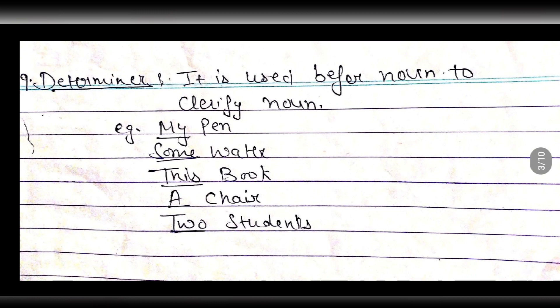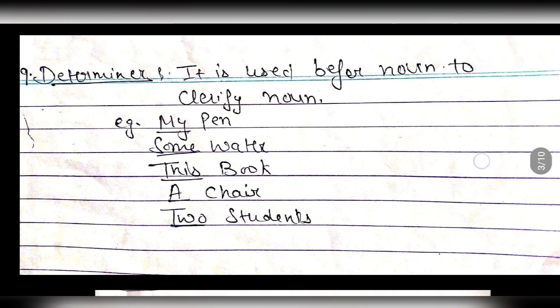Next is determiner. A determiner is used before a noun to clarify it. Articles and adjectives can act as determiners, but not all determiners are articles or adjectives. For example, 'my pen' — 'my' clarifies the noun 'pen,' so it is a determiner. Examples: 'my pen,' 'some water,' 'this book,' 'a chair,' 'two students.' Here 'my,' 'some,' 'this,' 'a,' and 'two' are all determiners.